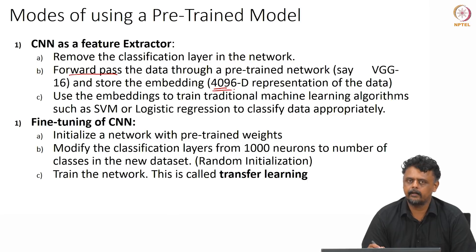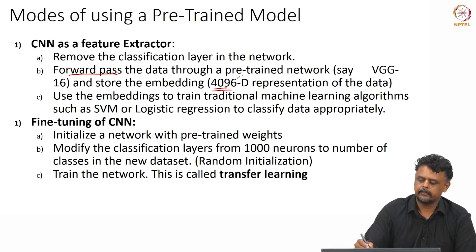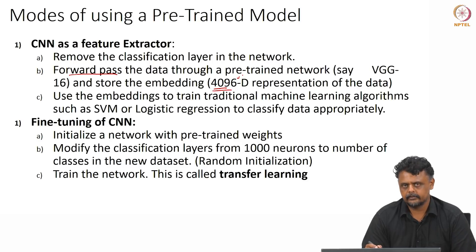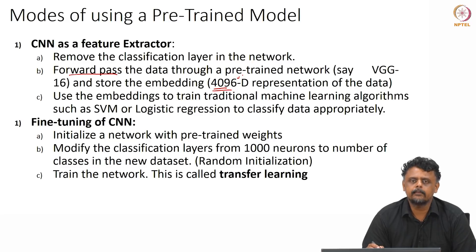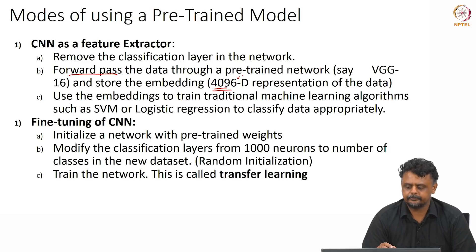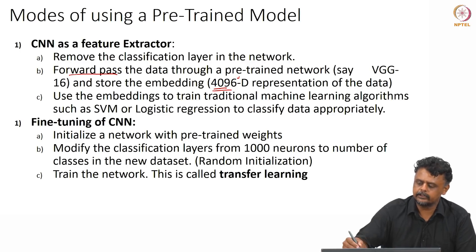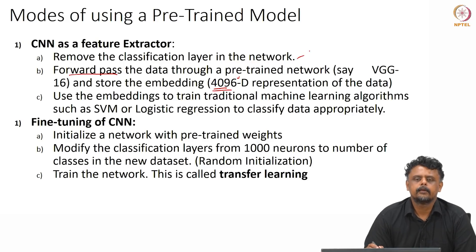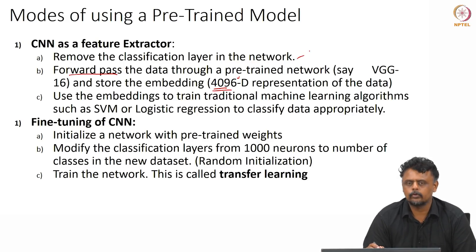Your input data is now represented by a 4096-length feature vector — that is the feature that represents your data. You use this as input to another machine learning framework, such as an SVM, support vector machine, or decision trees, or maybe just another neural network that you can train with this data and classify it appropriately. This strategy — taking the embedding, in this case a 4096-D vector from your CNN — works very well.